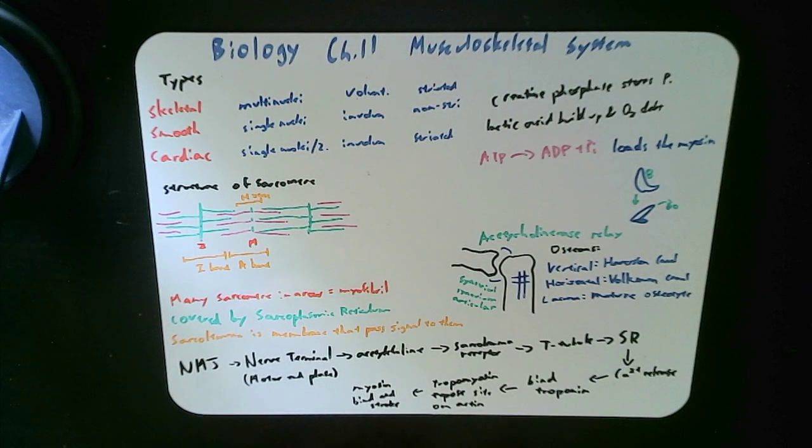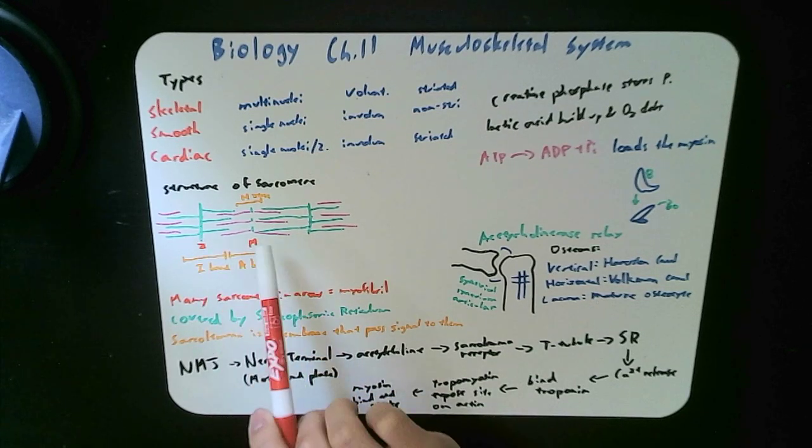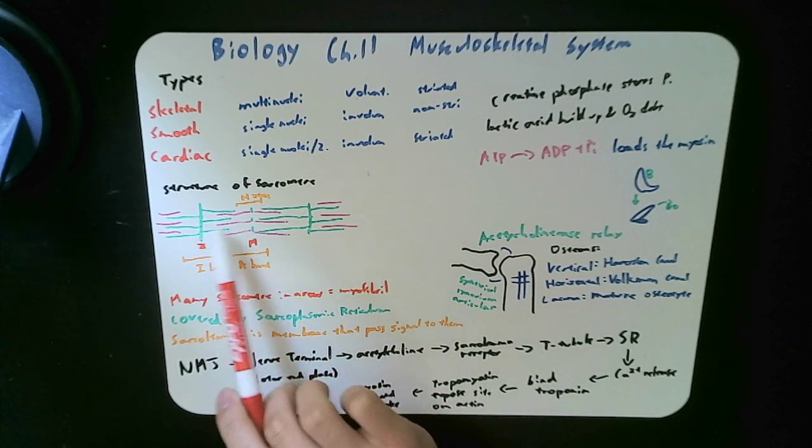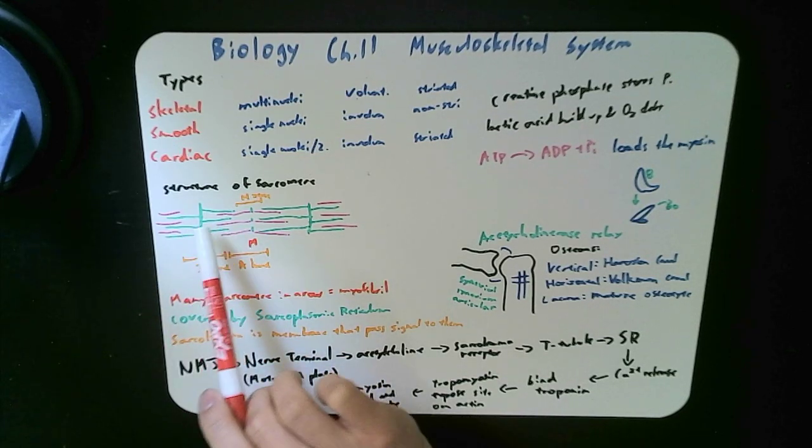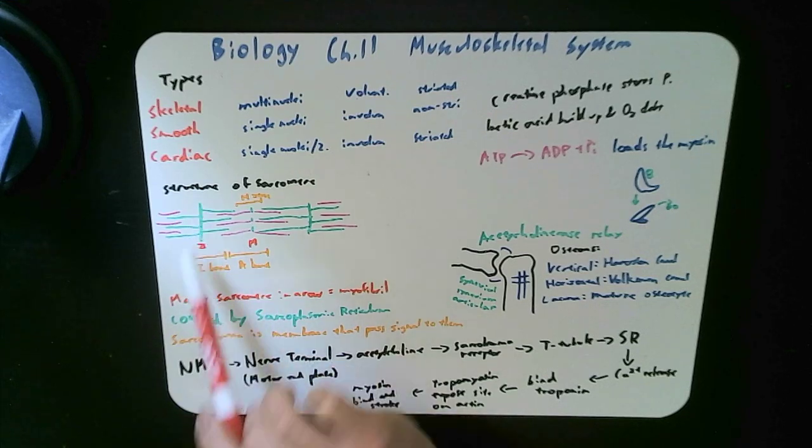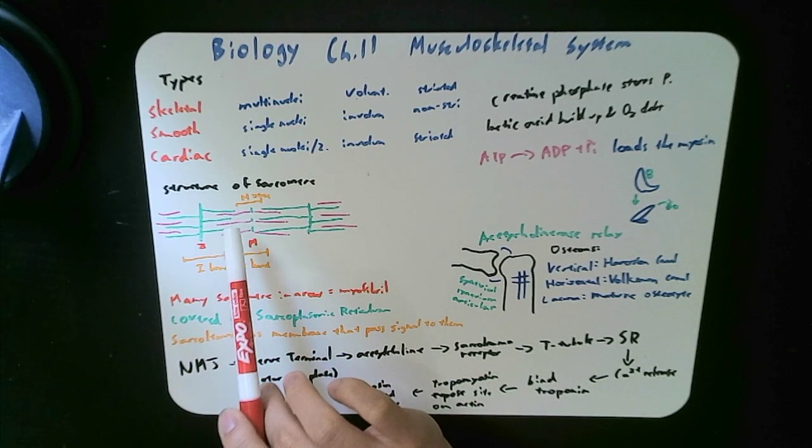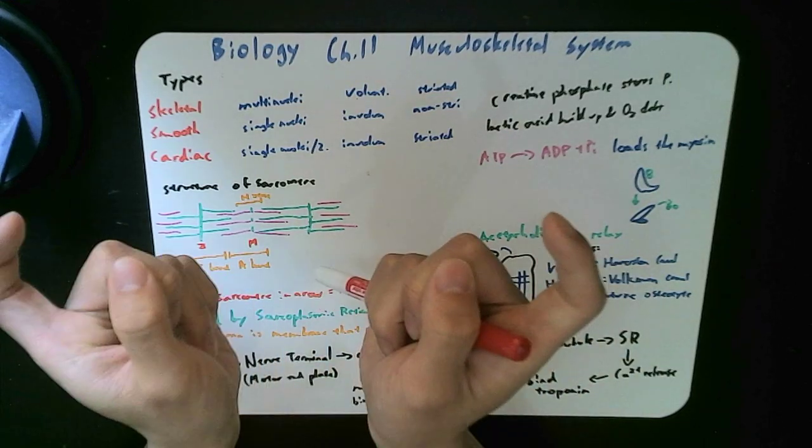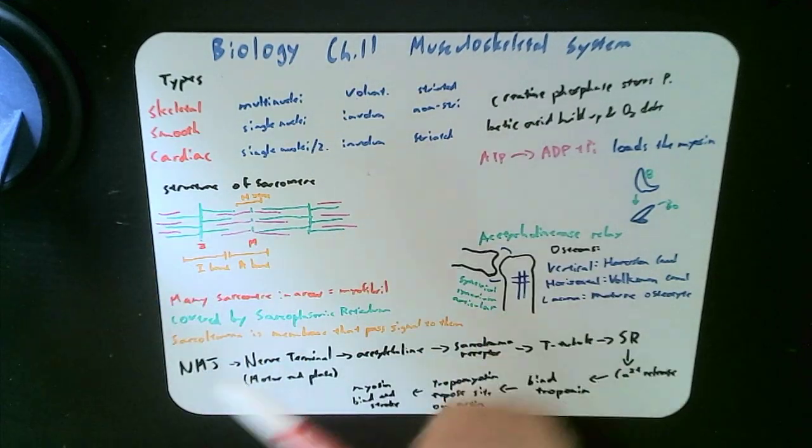Now the structure of the sarcomere, the basic unit of a muscle. What we have here are several places. The purple or pink is denoted by the myosin. They're pretty thick whereas the ones straight are the actins, right? They're thin ones. The myosins, they have the little hook onto them and they do the pulling. They pull the actin sides together.